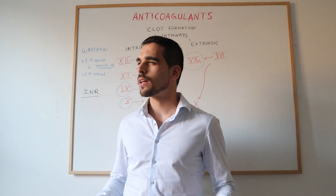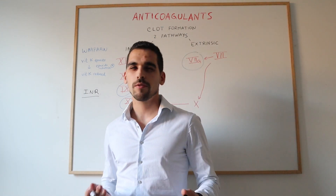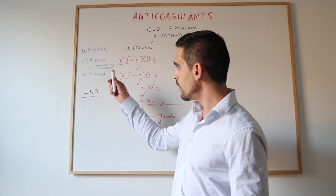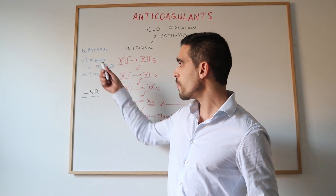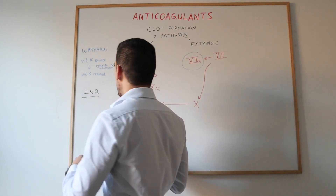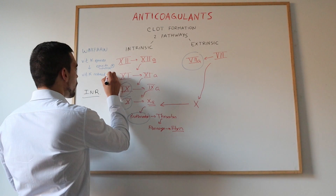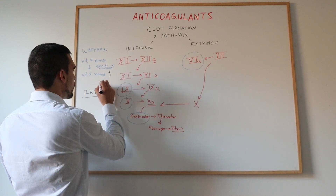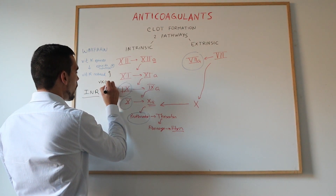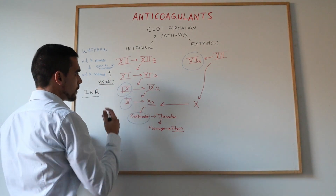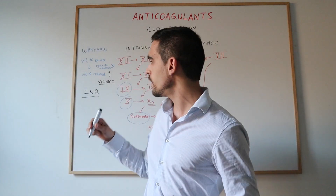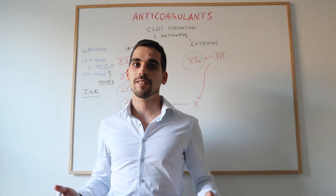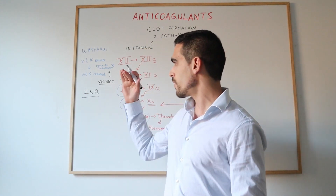Another interesting fact about warfarin is that there can be variability in patient response due to genetic variations in the gene that encodes vitamin K epoxide reductase. This gene is called the VKORC1 gene, and because there is room for variability in this gene, patients may respond differently to warfarin.